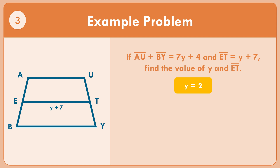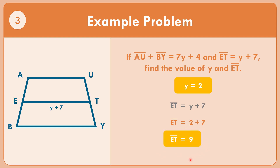Now for segment ET, with the value of Y equals 2: segment ET equals Y plus 7. Replace Y with 2, so that becomes 2 plus 7. Segment ET equals 9. So the value of the median of the trapezoid is equal to 9.